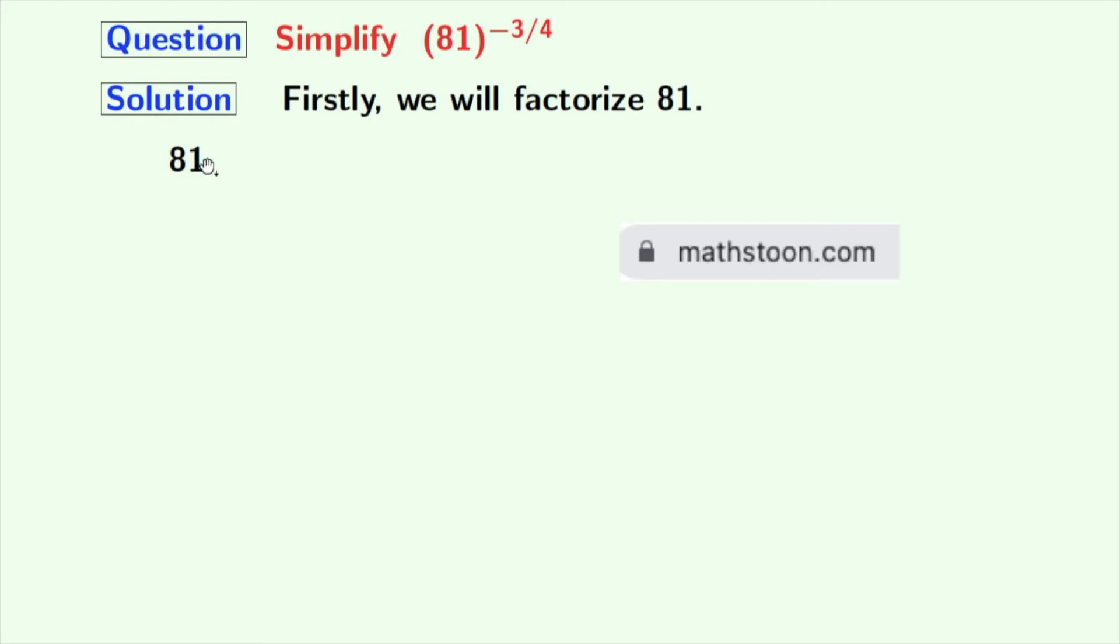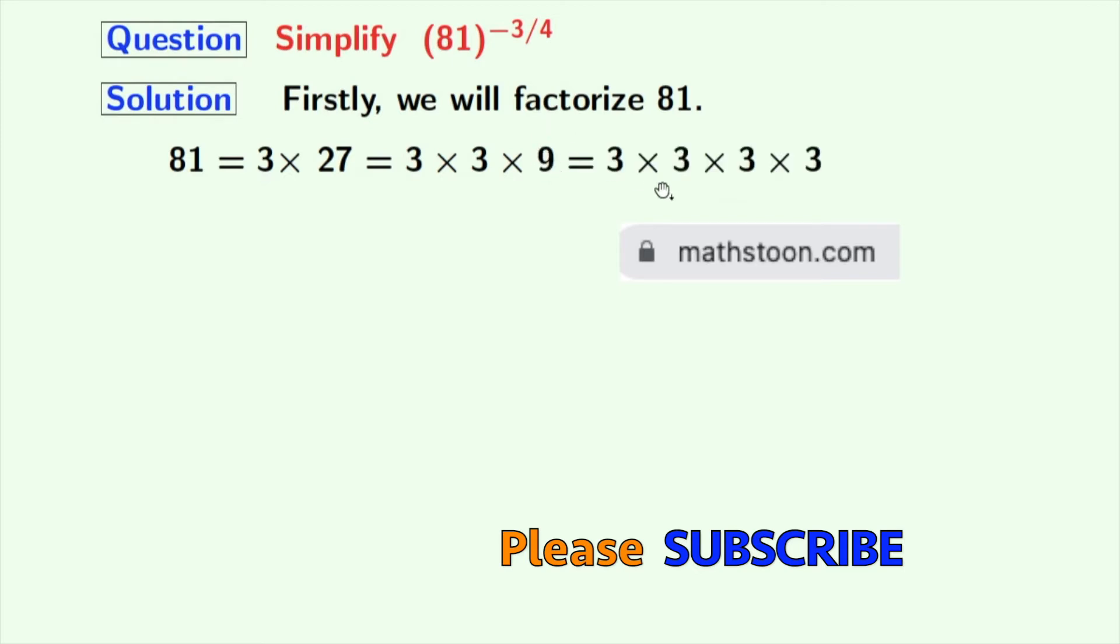Look that we have 81 equals 3 times 27. By the same logic, 27 equals 3 times 9. We all know that 9 equals 3 times 3. So, finally, we have 81 as the product of four 3s. So, this can be written as 3 to the power 4.